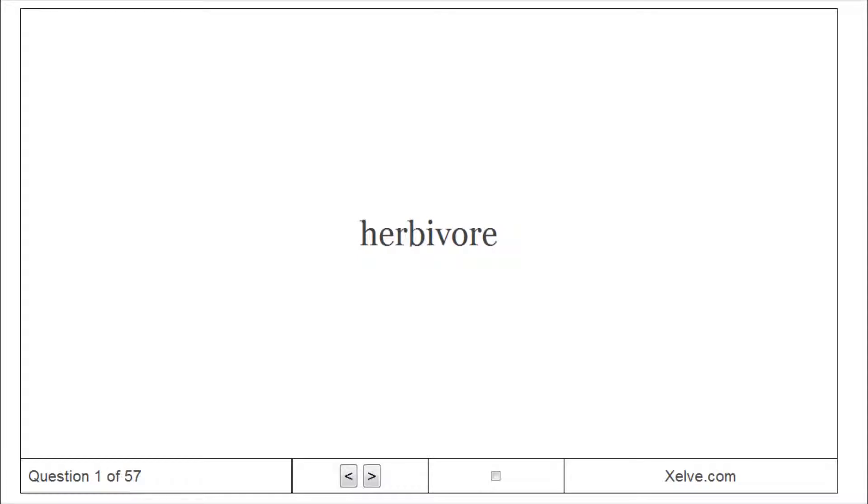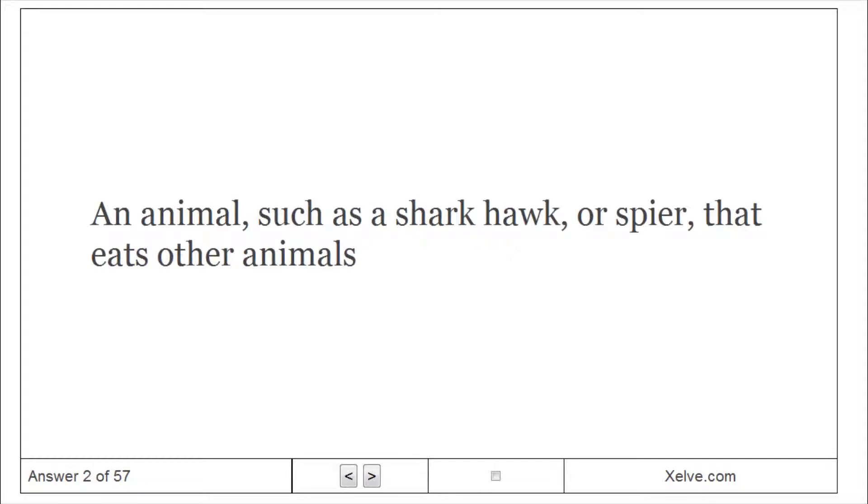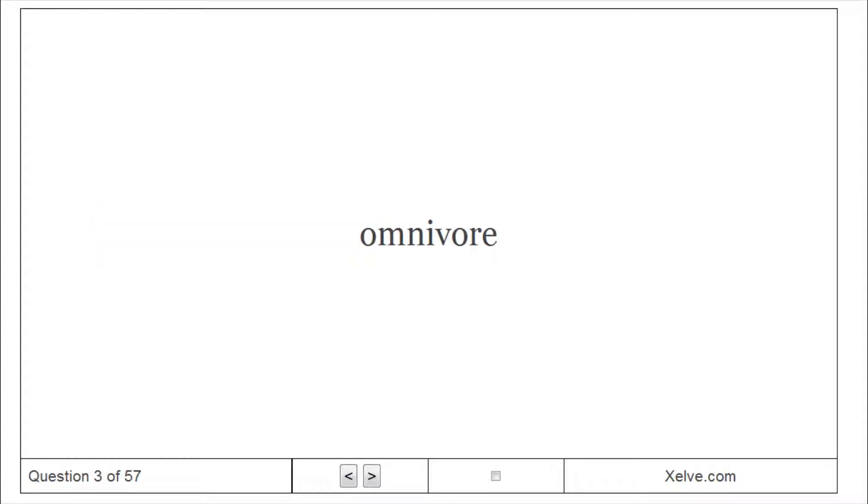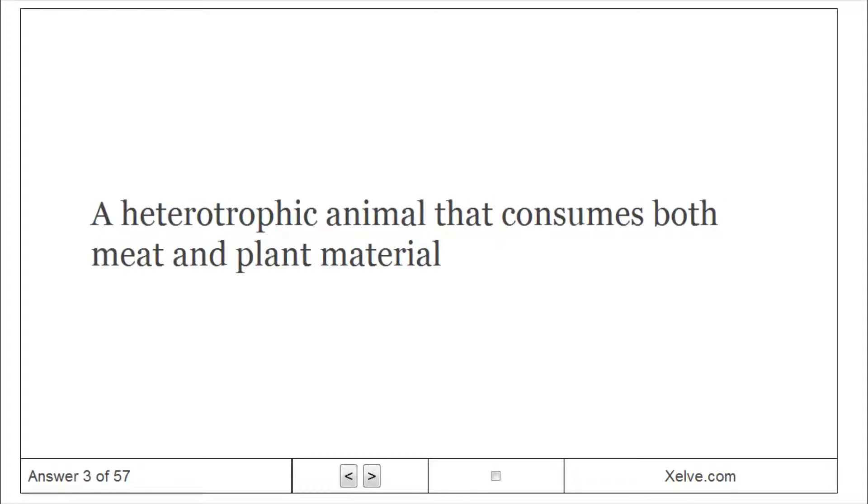Herbivore – a heterotroph that eats plants. Carnivore – an animal that eats other animals. Omnivore – a heterotrophic animal that consumes both meat and plant material.